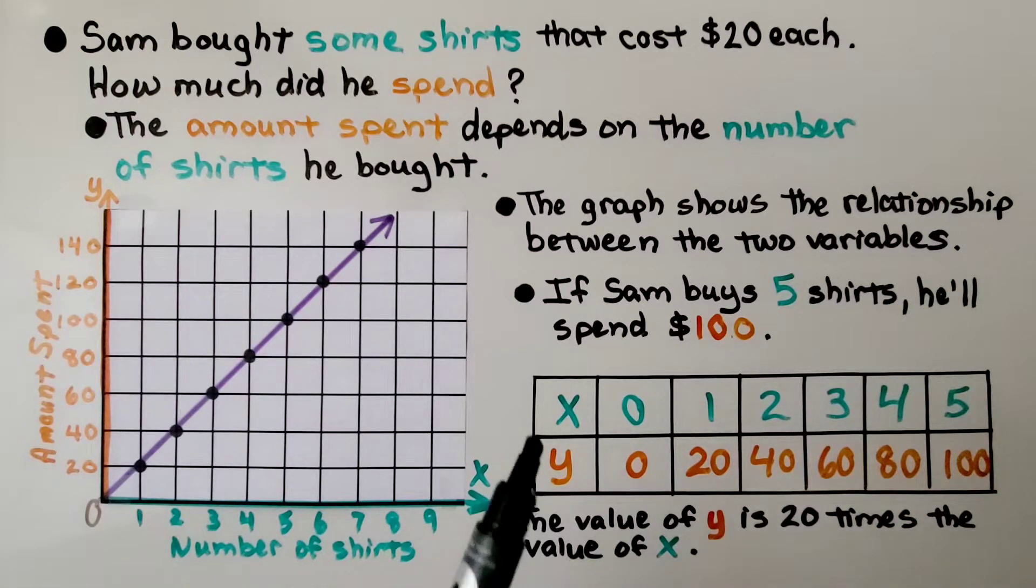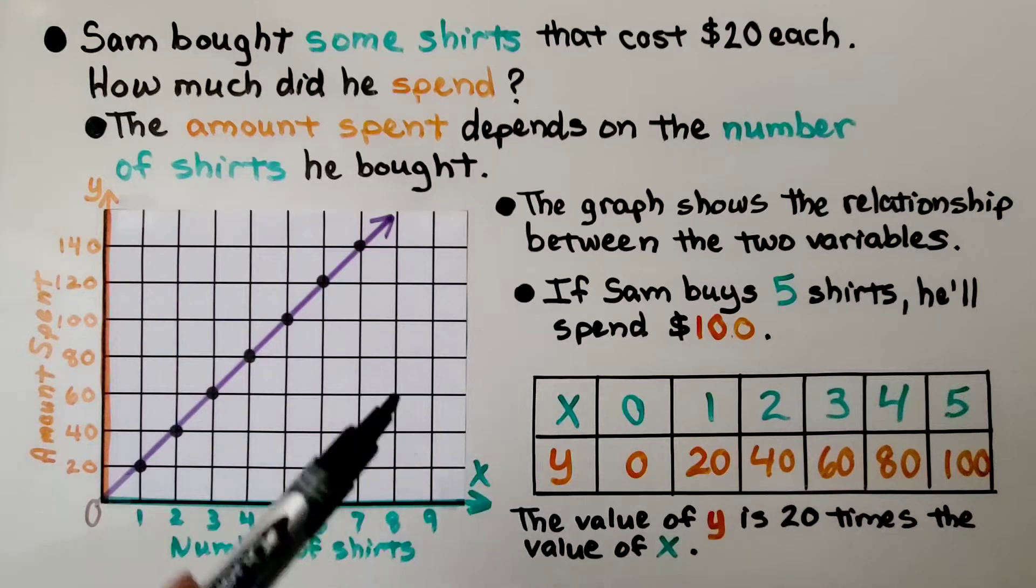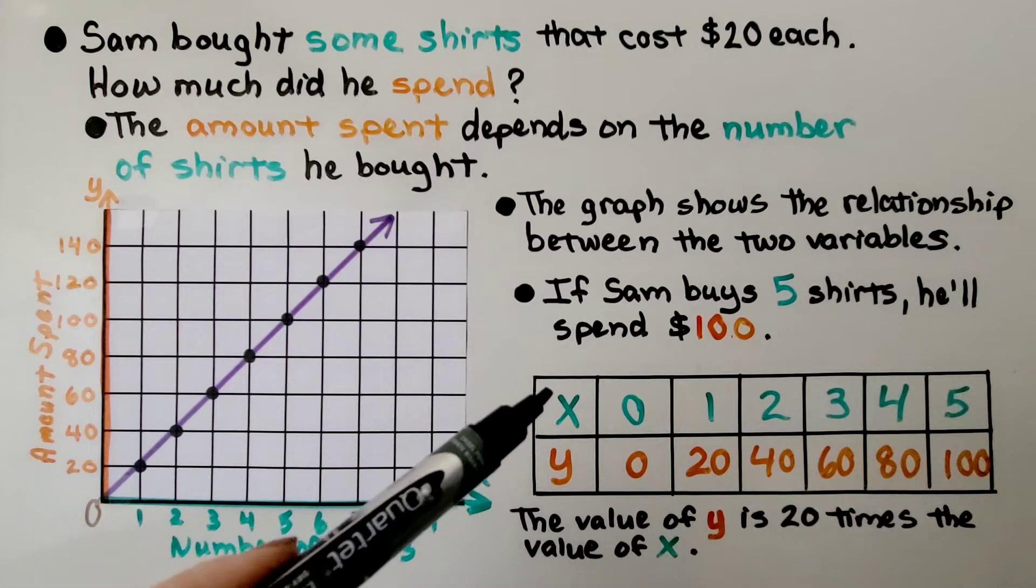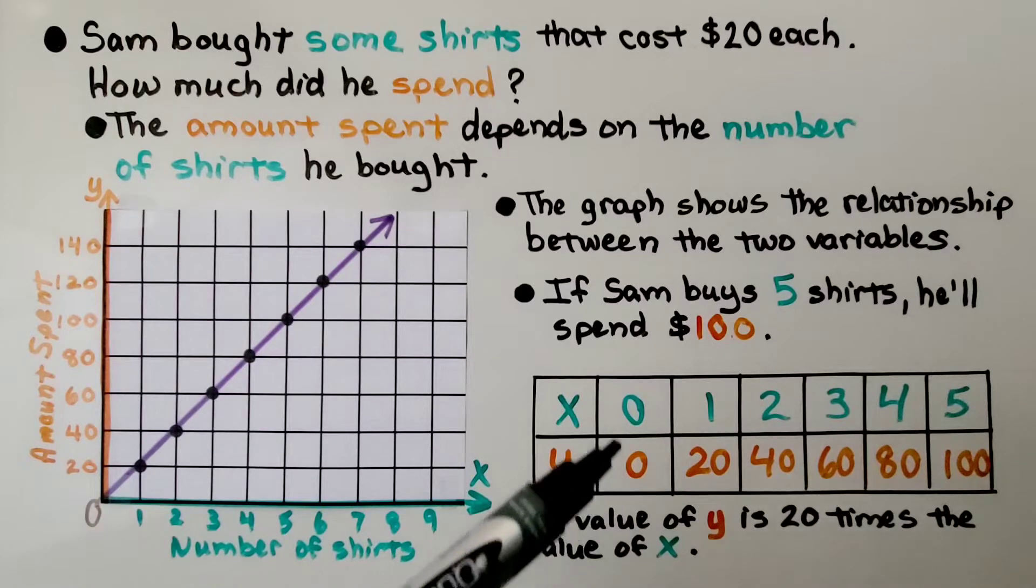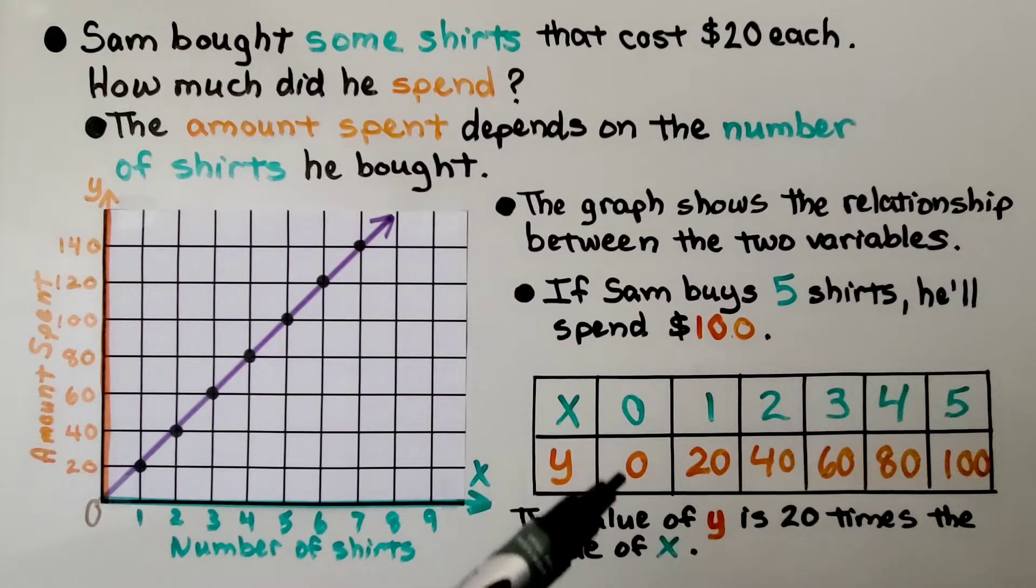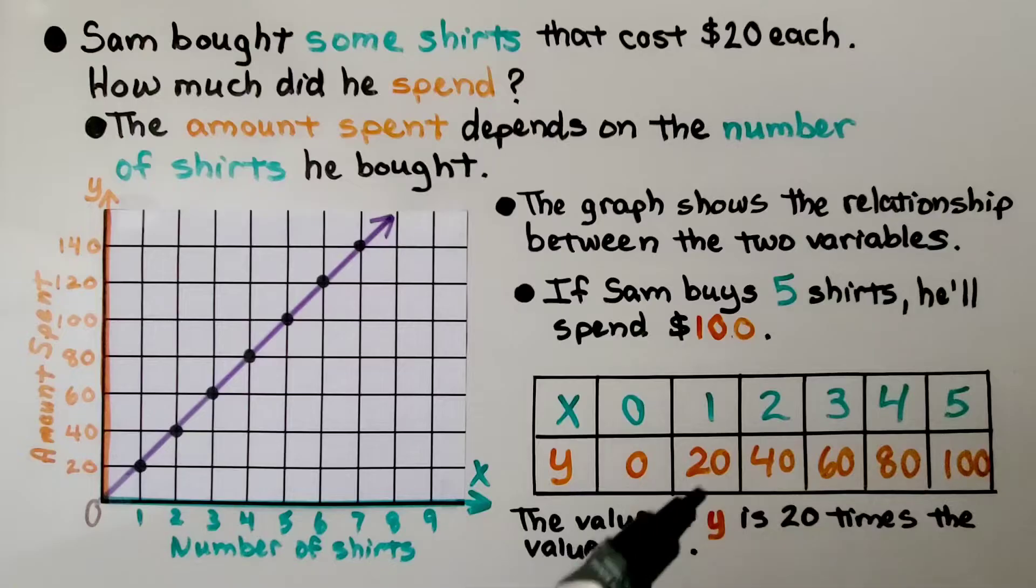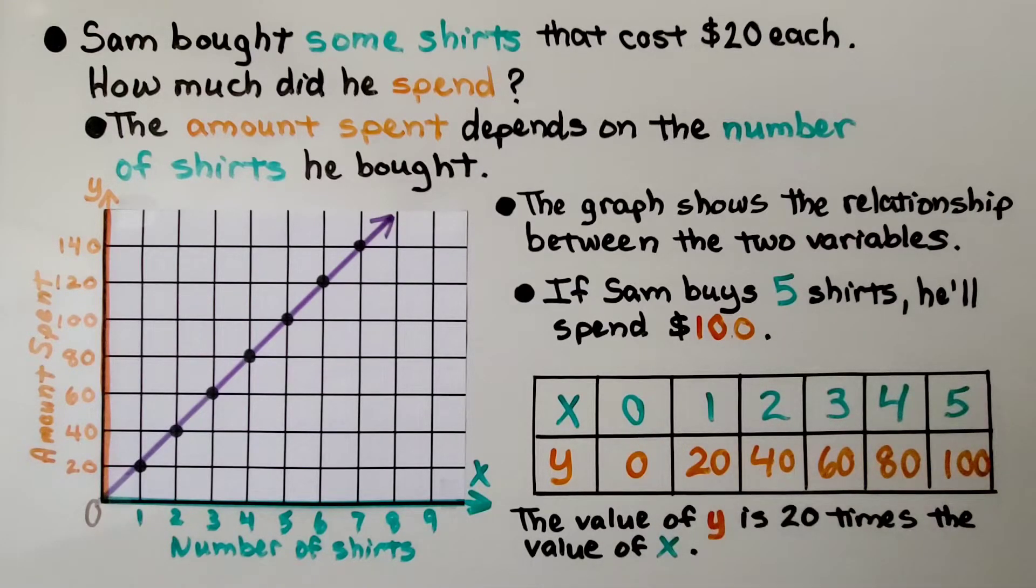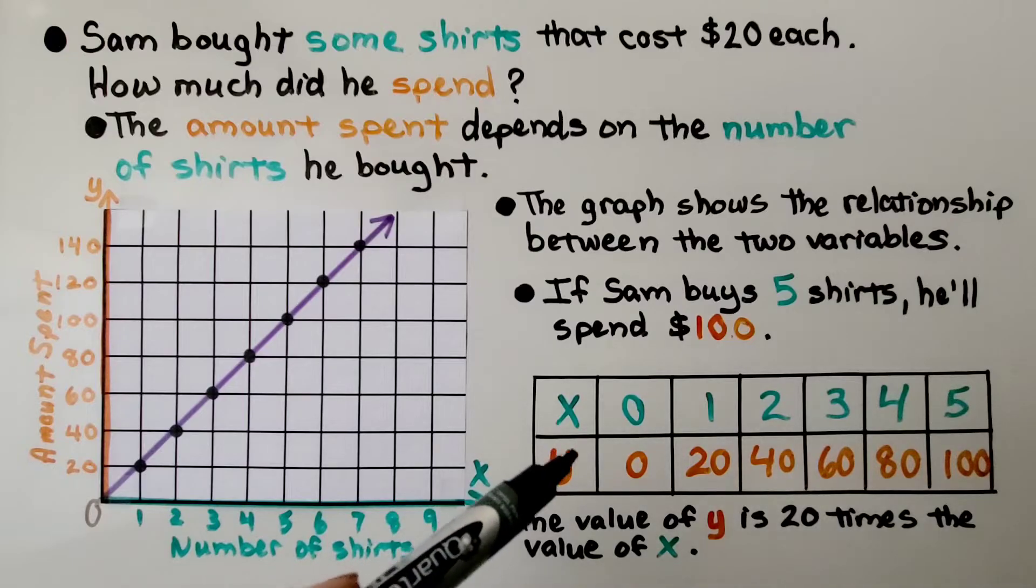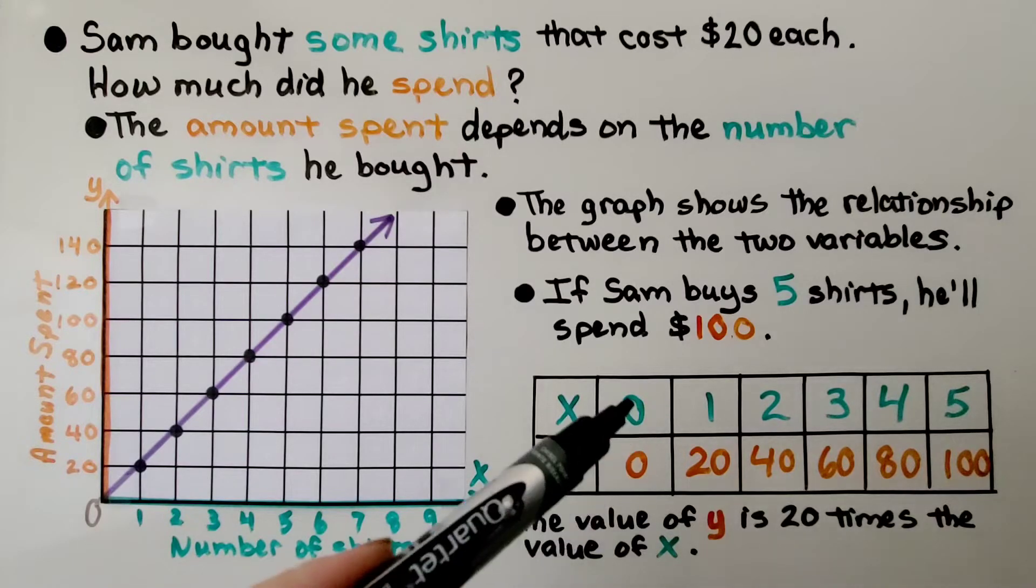We have a table of x and y values. The x is the independent value, and the y is the dependent value. When he purchases 0, he spends 0. If he gets 1 shirt, it's $20. 2 shirts, it's $40, and so on. The value of y is 20 times the value of x.